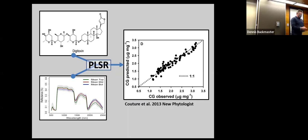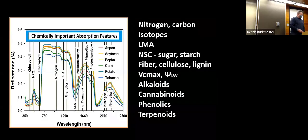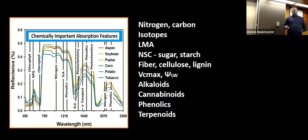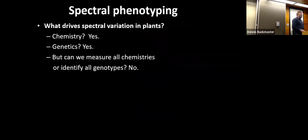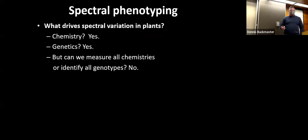To date we've published models showing variation in primary and secondary metabolites, structural components, and how all of these respond to stress — whether pest and pathogen pressure, abiotic stress, nutrient stress, or water stress. The ability to do this is limited only by your imagination of what you think you can model, and I'll show you some extremes we're moving into.